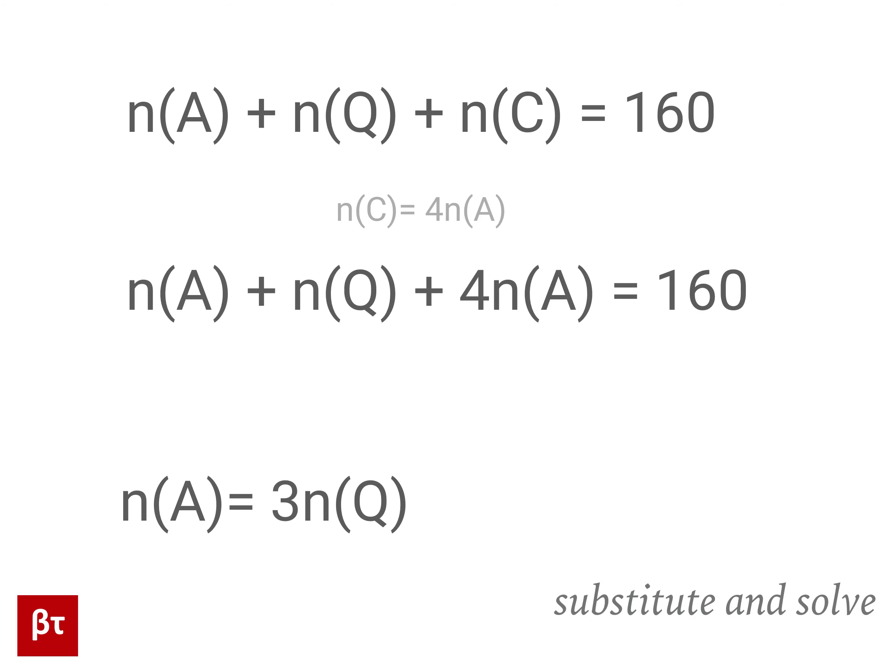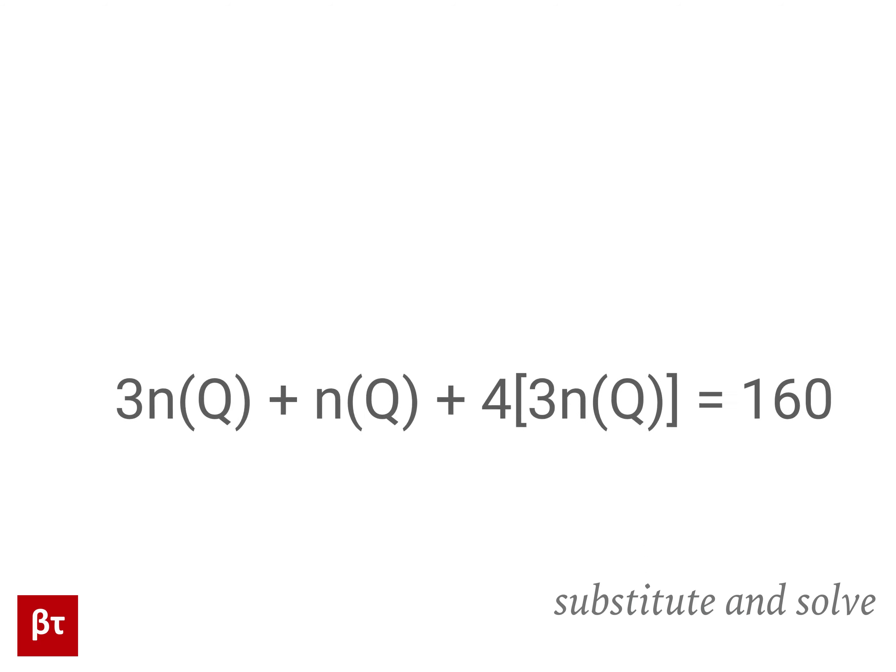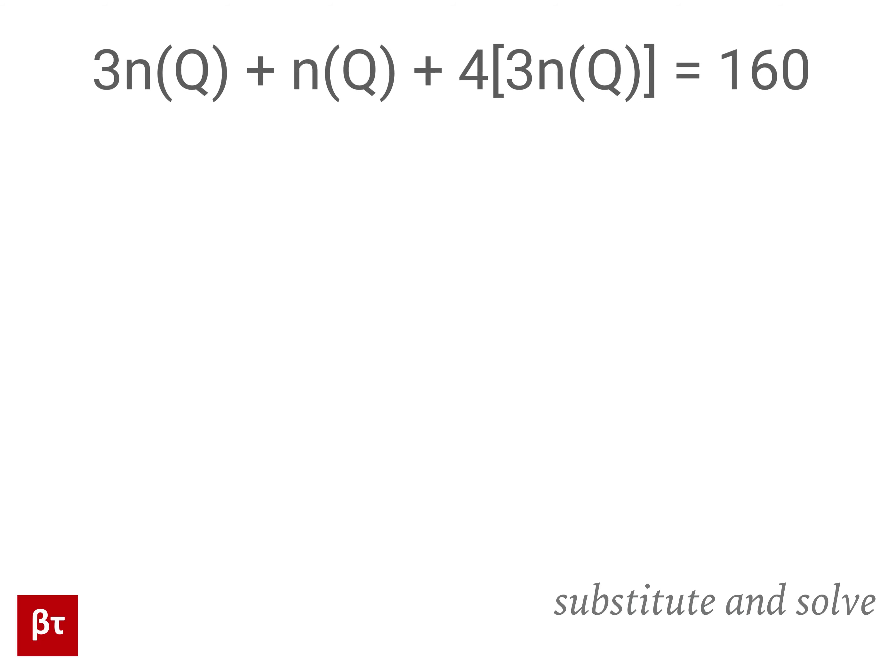Now we're going to eliminate A as a variable. Notice that we can substitute our 3Q every time we see A. Doing that, we'll get 3Q plus Q plus 4 times 3Q. If we simplify by multiplying coefficients, we get 3Q plus Q plus 12Q. And then if we add like terms, we get 16Q.